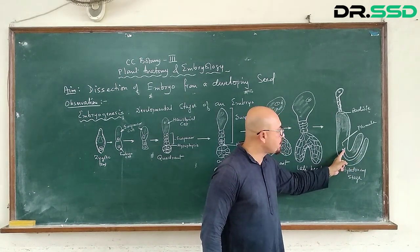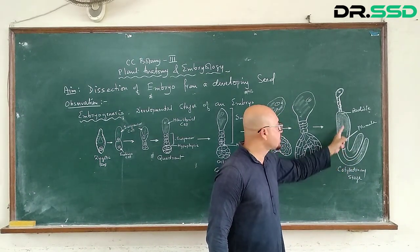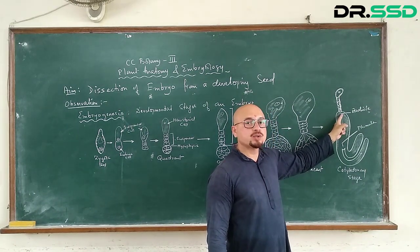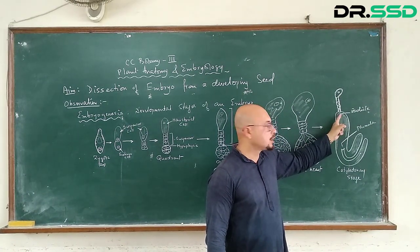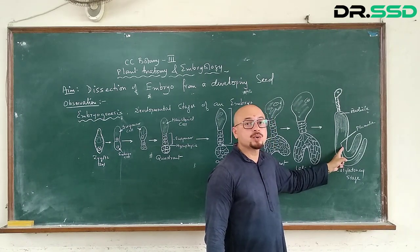This is the shoot, typically called the plumule, and it is a radicle. This radicle is eventually going to give rise to the root. The plumule is going to give rise to the shoot.